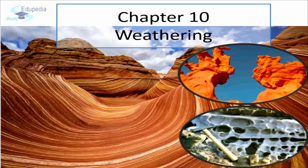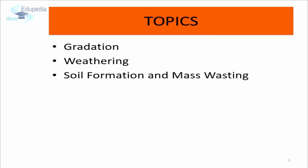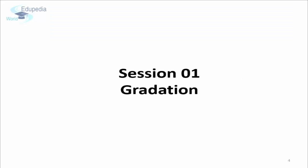In this chapter, we will try to understand how the process of weathering takes place. This chapter has been divided into three topics: gradation, weathering, soil formation and mass wastage.